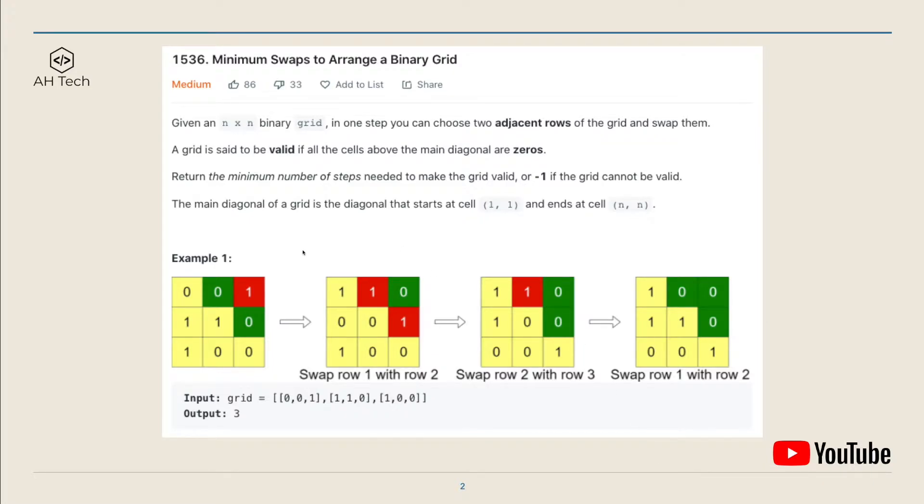Given an n times n binary matrix, in one step you are able to choose two adjacent rows of the grid and swap them. A grid is said to be valid if all the cells above the main diagonal are all zeros. We have to return the minimum number of steps needed to make the grid valid. If it is not possible, we will just return negative one.